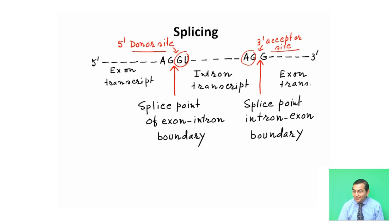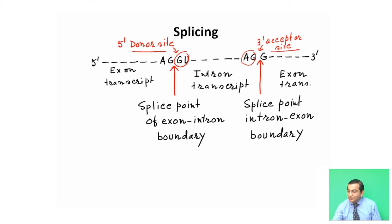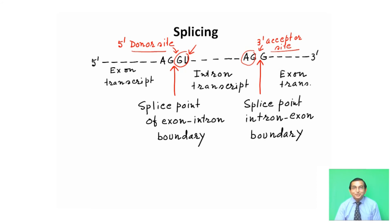Splicing refers to the removal of the intron portion. The splicing signal is sent by two sequences: a GU sequence and an AG sequence. The GU sequence is present at the 5' end of the intron, called the donor site, and the AG sequence is present at the 3' end of the intron, called the acceptor site. The GU at the beginning of the intron marks the 5' splice point (exon–intron boundary), and the AG at the end marks the 3' splice point (intron–exon boundary).